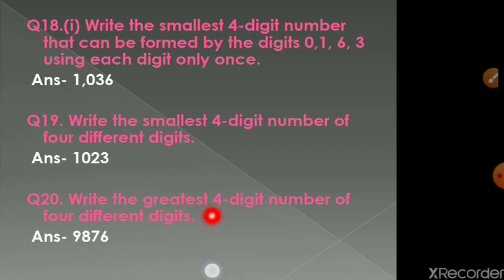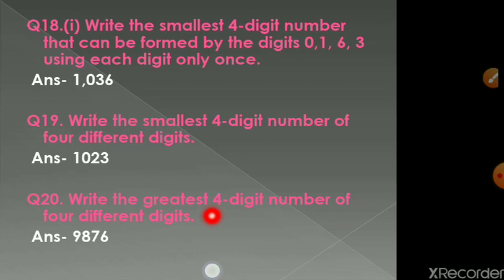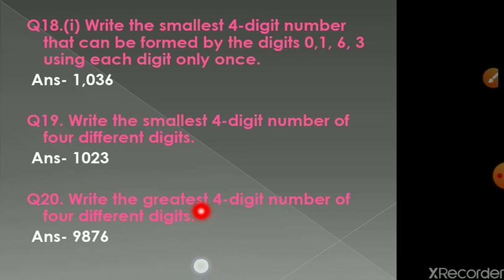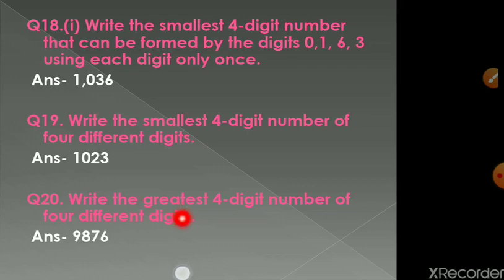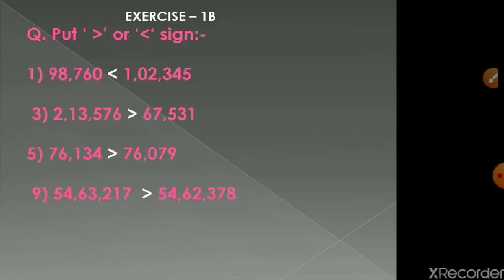Question number 20: write the greatest four-digit number of four different digits with no repetition at any place. Start with the highest single-digit number, which is 9, then arrange in descending order: 9, 8, 7, 6. The number is 9876. If repetition were allowed, the greatest four-digit number would be 9999.